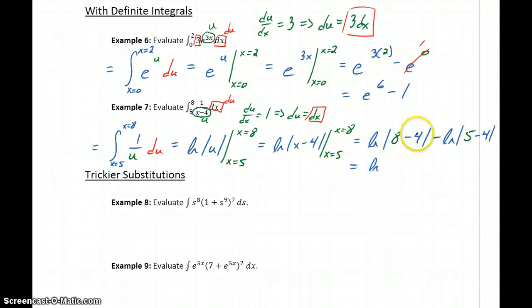Which will be the natural log of 8 minus 4 is 4, and the absolute value of 4 is just 4, so this becomes the natural log of 4, minus the natural log of the absolute value of 1, or just the natural log of 1, which is 0. So we get, as our final answer, the natural log of 4.